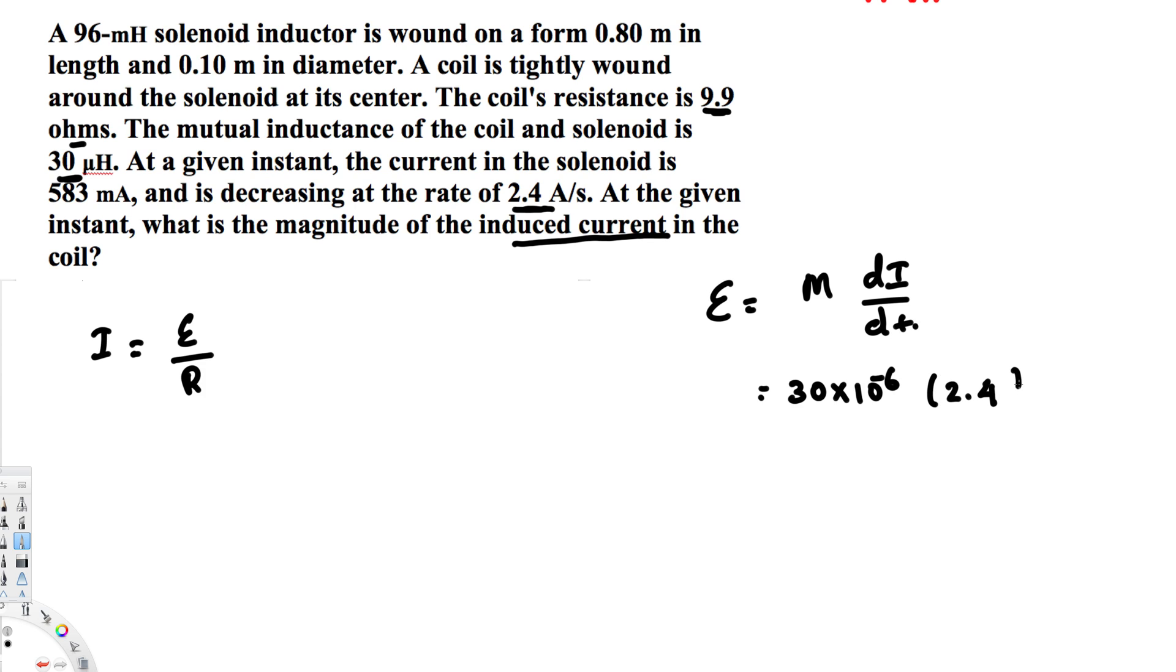Let's bring this one together and plug it here. So this is going to be 30 times 10 to the power of minus 6 times 2.4 divided by the resistance, that is 9.9. And if you calculate the whole thing together you will get 7...